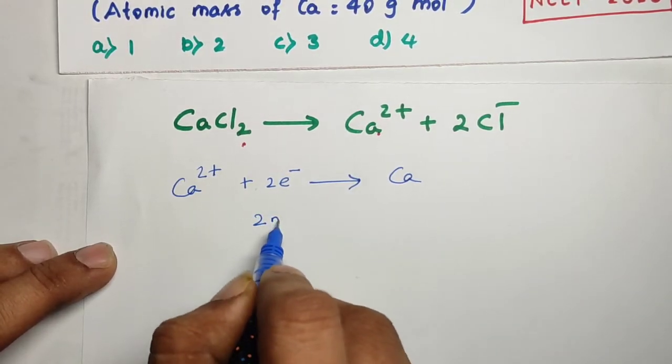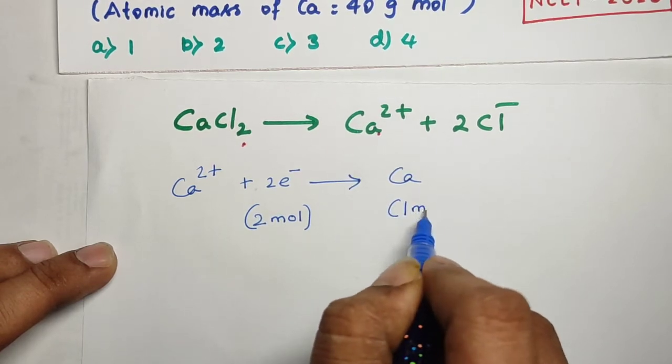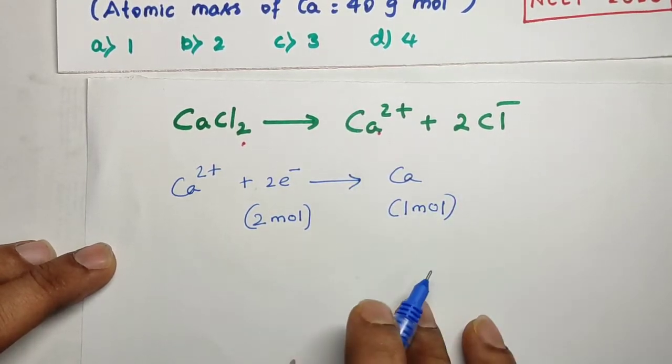Okay. It will take how many moles of electrons? Two moles of electrons and it will form one mole of calcium. Okay.